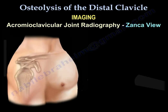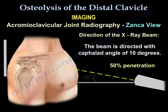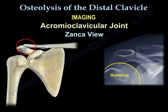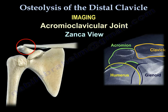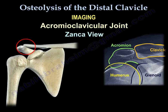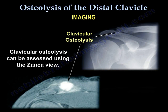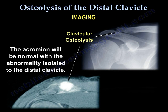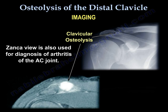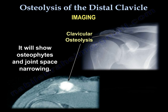The best radiological view for the AC joint is the Zanka view. The beam is directed with a cephalad angle of 10 degrees using 50% penetration. This is how the Zanka view looks — showing the clavicle and the acromion. Clavicle osteolysis can be assessed using this view, with the acromion appearing normal and the abnormality isolated to the distal clavicle. The Zanka view is also used to diagnose AC joint arthritis, showing osteophytes and joint space narrowing.